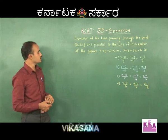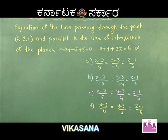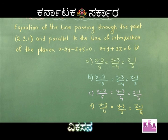The next question: equation of a line passing through the point (2, 3, 1) and parallel to the line of intersection of the planes x − 2y − z + 5 = 0 and x + y + 3z = 6.